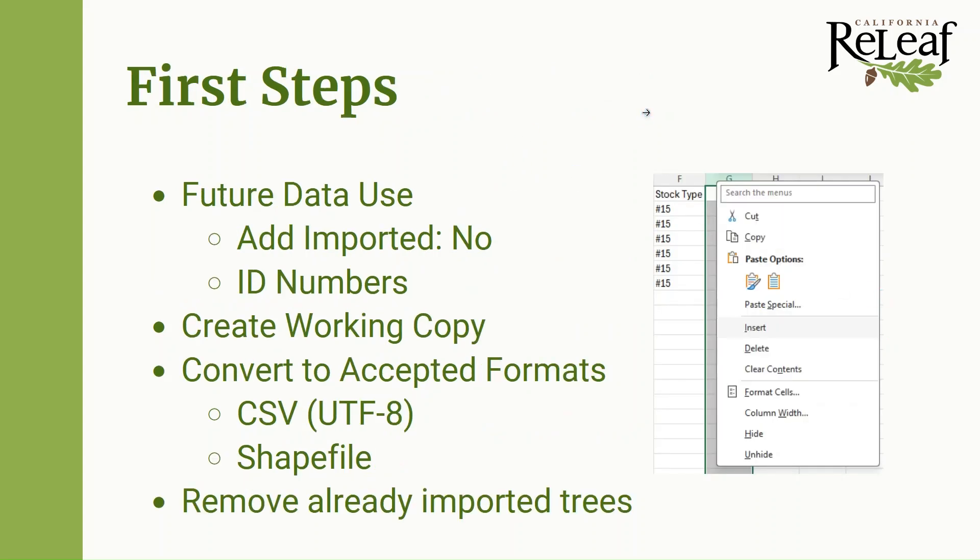The first steps to adding your tree inventory into Tree Plotter are to think about whether you're going to be using this data in the future in its current form. If you have a spreadsheet, think about whether you're going to be going back to that spreadsheet after you've completed the import, or whether you're going to move it into Tree Plotter and then be done with it. If you do plan to go back to the old data set, there are a couple of modifications you might want to make. You may want to mark which trees have been imported and which have not — this is important especially if you're going to be moving some trees in and others not, so you can avoid accidentally importing the same tree twice.